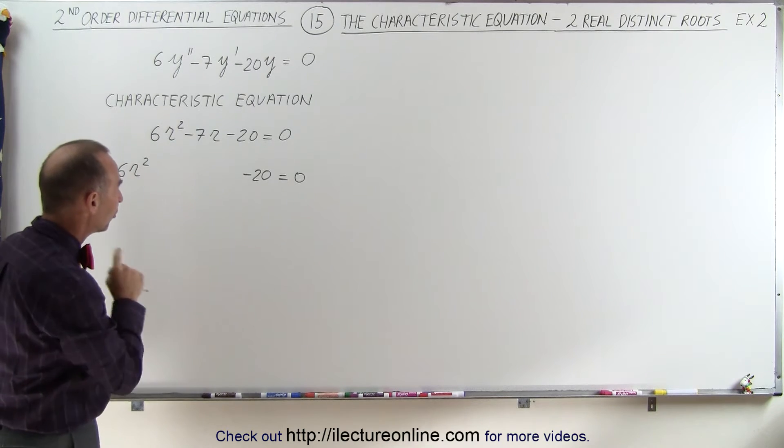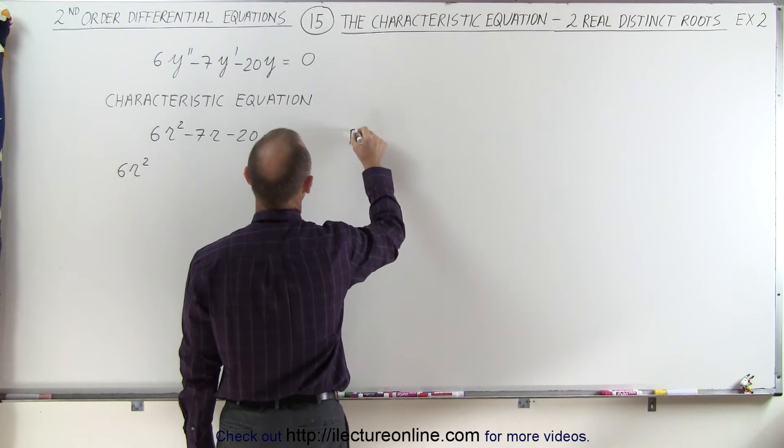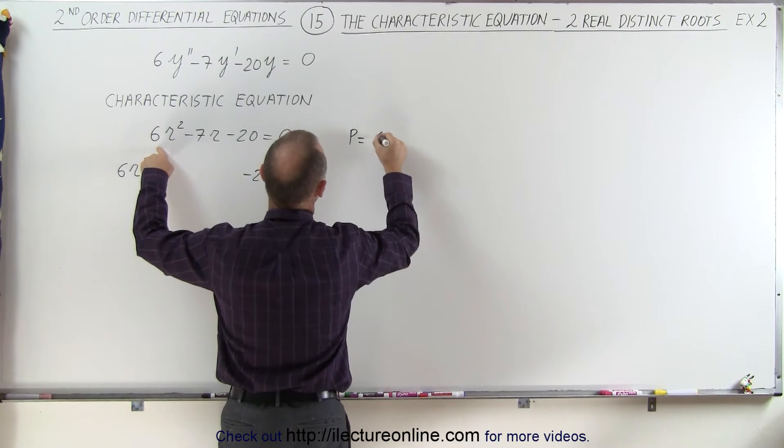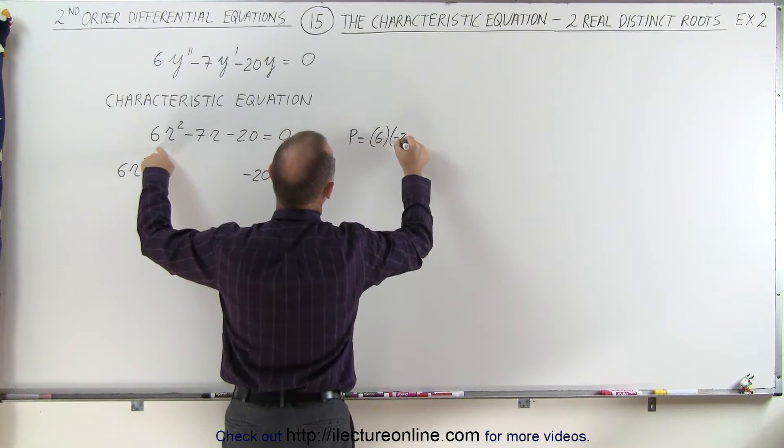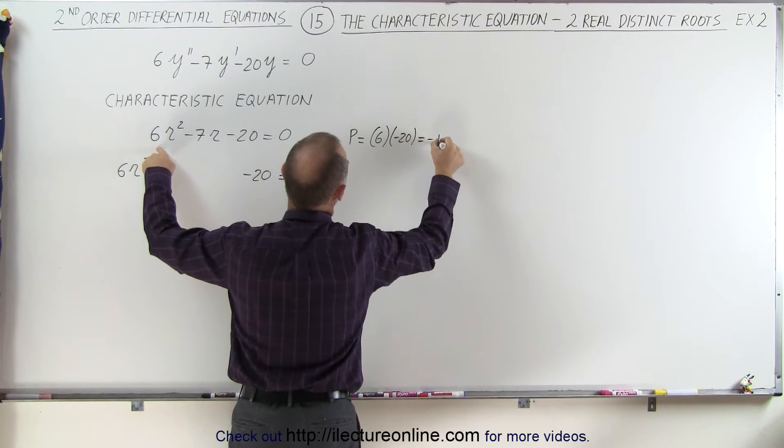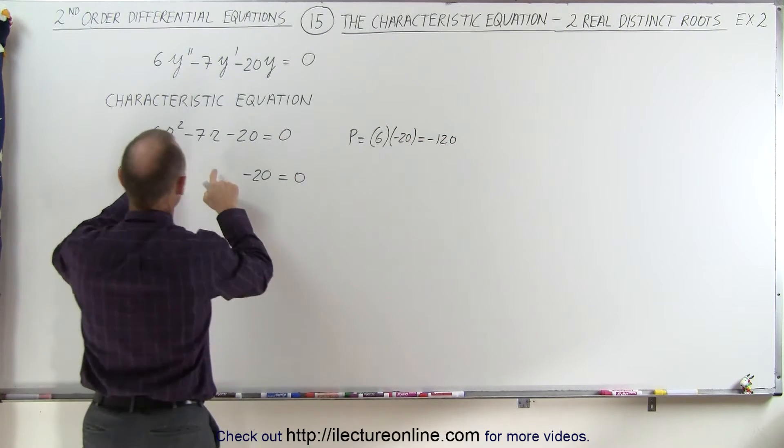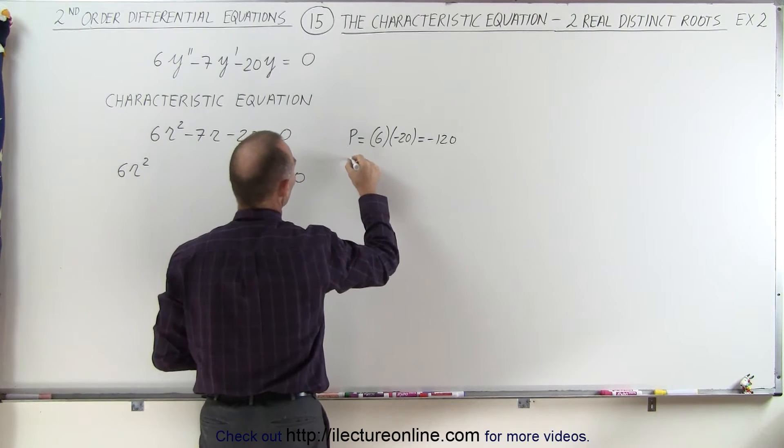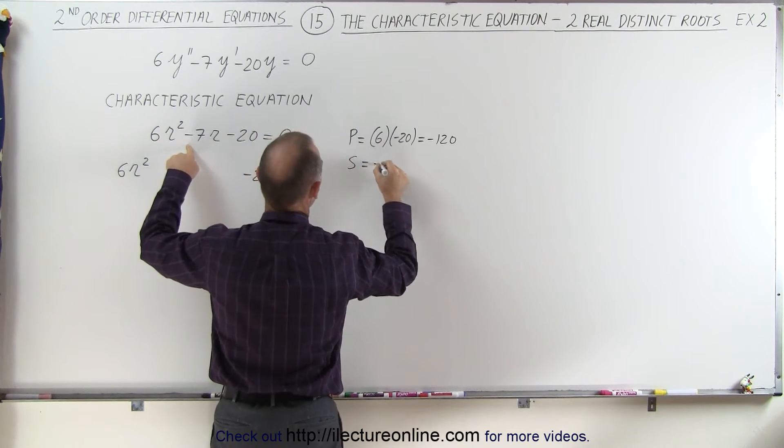The coefficients can be found by saying that the product will equal the product of these two: 6 times -20, which is -120. So whatever the two coefficients are, when you multiply, you get -120, and the sum has to equal -7.